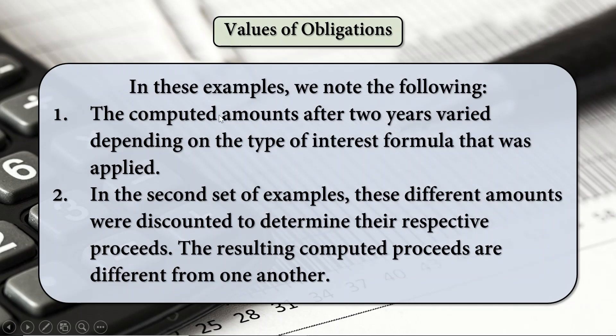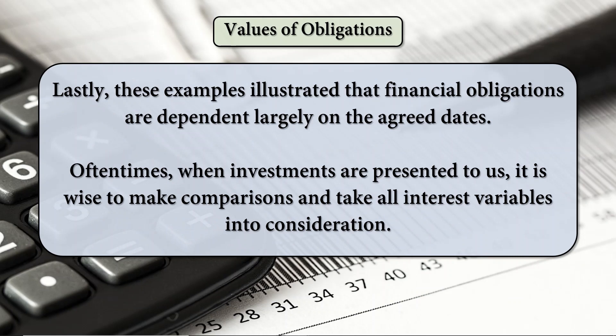Noting these results: the computed amounts after 2 years varied depending on the type of interest formula applied. In the second set, these different amounts were discounted to determine their respective proceeds, and the resulting proceeds are different from one another. These examples illustrate that financial obligations depend largely on the agreed dates, and it is wise to compare all interest variables when evaluating investments.